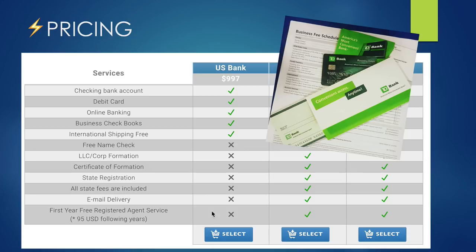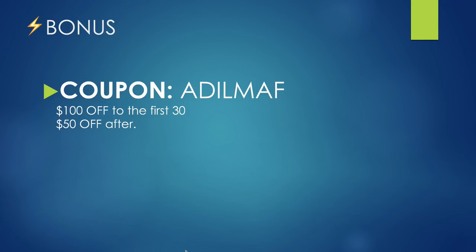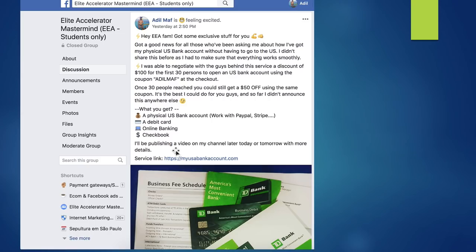Just a quick note: the price you see may change — I've been talking to the team and they said they'll keep raising it. This price is as of October 22nd, 2018. I have a cool bonus: for the first 30 people to enroll and purchase the service using coupon code 'AdeelMath' at checkout, you get $100 off. After the first 30, you get $50 off. I've only announced this in the Ecomelit Accelerator mastermind so far — it's extremely exclusive.